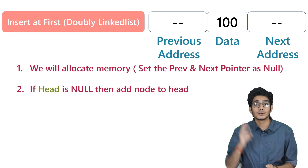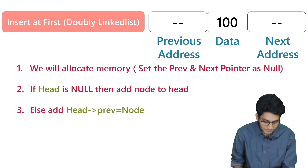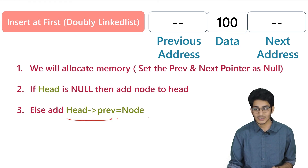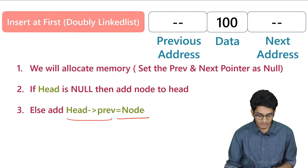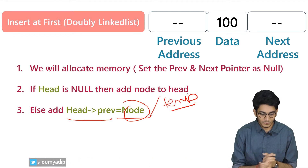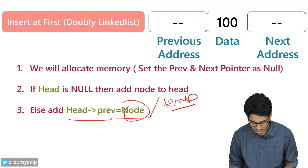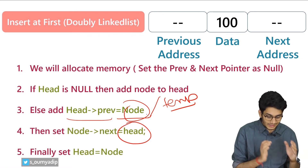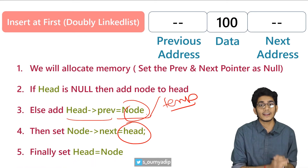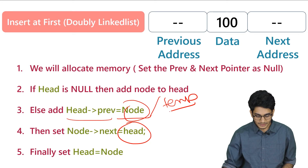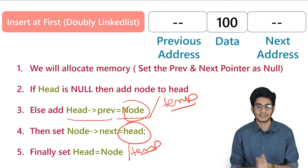If head is not null, then we have to move two pointers. At first, we'll assign head prev equals to node — you can call this node as temp as well. Then you have to assign node next equals to head. After that, you have to initialize the value of head to the node or temp. You can name it anything, whatever you want.